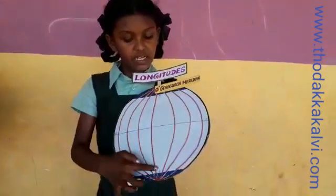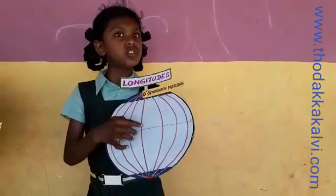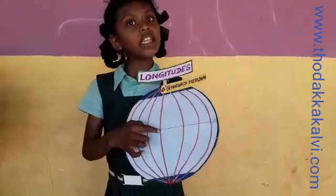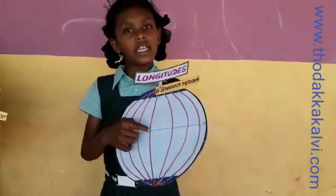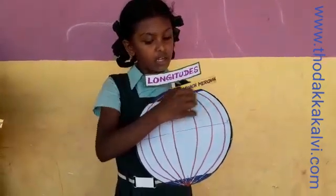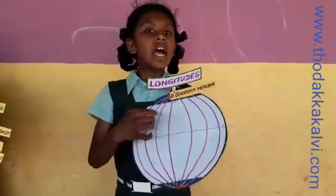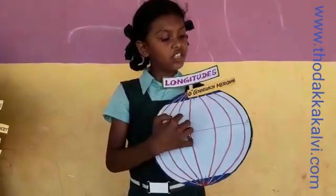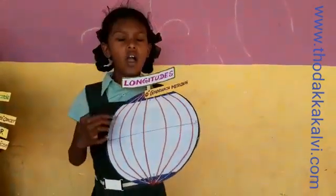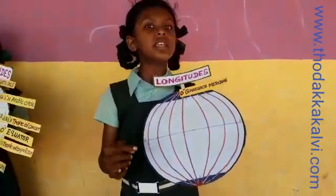It is known as the prime meridian. The prime meridian runs through the royal observatory at Greenwich in London in the United Kingdom. It is known as the Greenwich Meridian, which helps us in calculating the time.